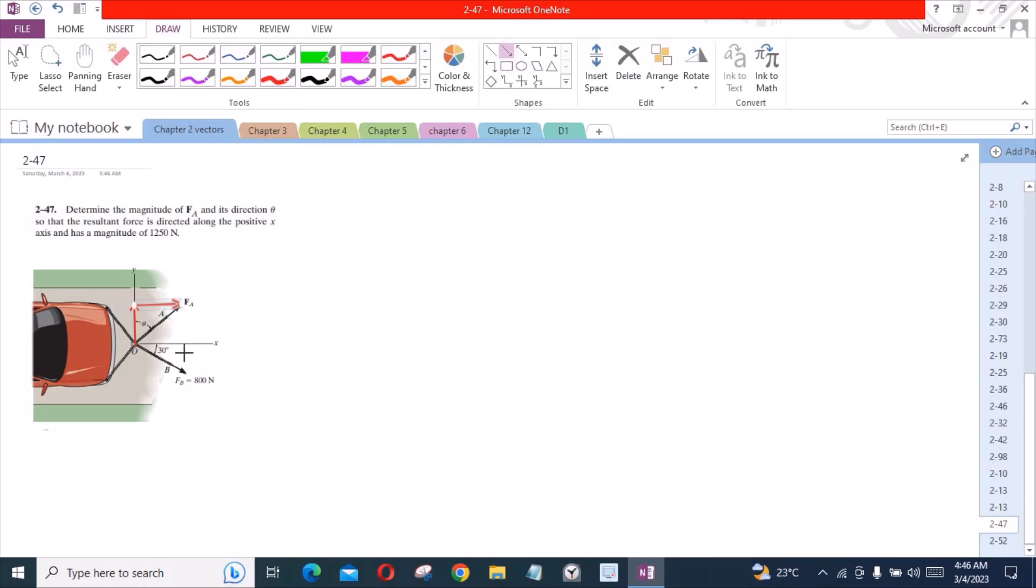Similarly, we have one vertical component and one horizontal component for Fb. Let's call this Fa sin theta and that component right here is Fa cos theta.